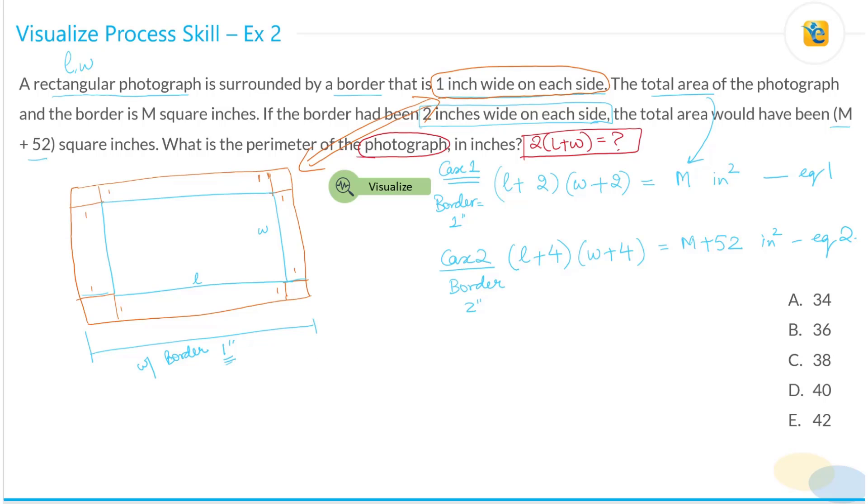So I'm going to take equation one. What do I have? L plus two into W plus two is equal to M. I'm going to open the parentheses. LW plus two times L plus W plus four is equal to M. And then I just leave this as is. Now let me take up, this is from case number one. Let me take up from case number two.